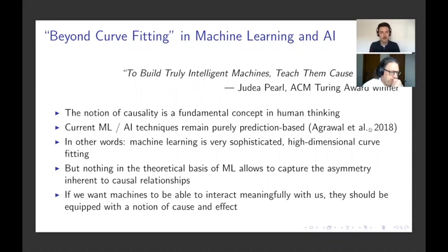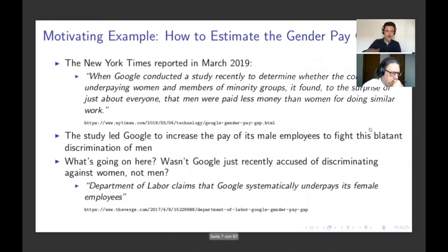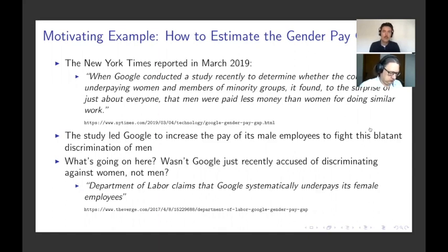I want to show you why this also matters in research and in the tech world. I have here an example coined the Google controversy from March 2019. Google had long been accused of underpaying women in the organization — there were many newspaper articles on this for many years. Google took this very seriously and investigated it. They have some of the best data science teams in the world, with many smart data scientists, and they investigated this problem.